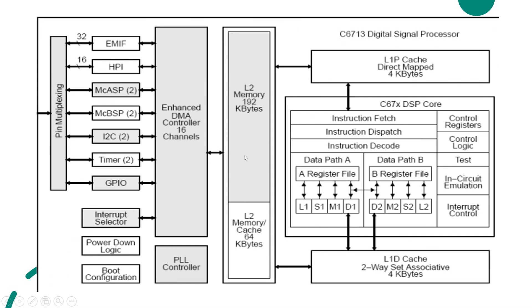This is the memory section. There are two memories. One is program memory and one is data memory. Program memory is 4K bytes. Data memory is 4K bytes. It is also a unified 192K bytes of L2 memory.